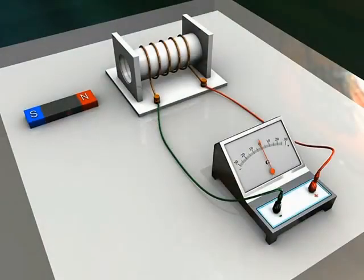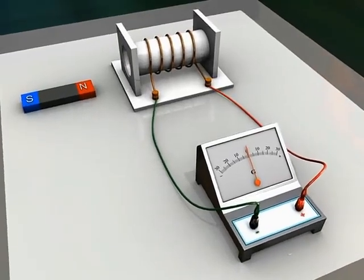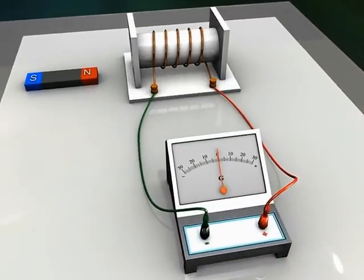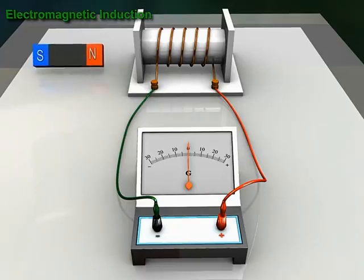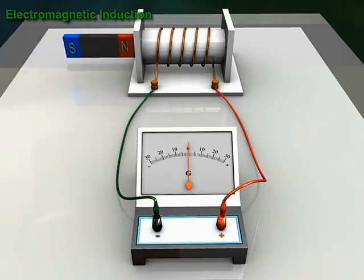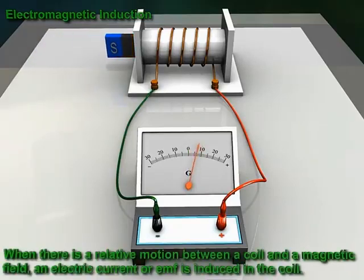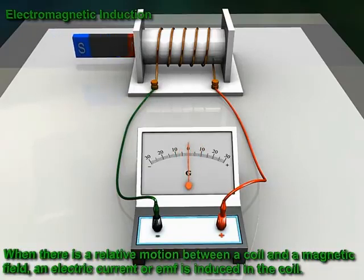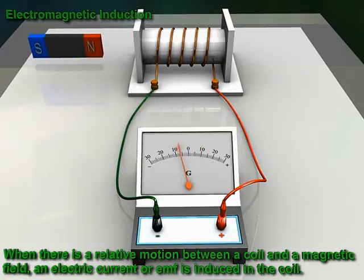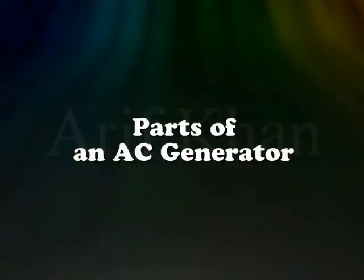An AC generator works on the principle of electromagnetic induction. In electromagnetic induction, when there is a relative motion between a coil and a magnetic field, an electric current or EMF is induced in the coil.